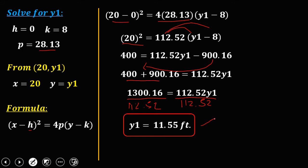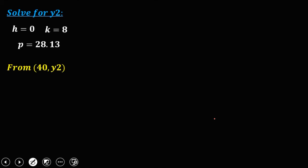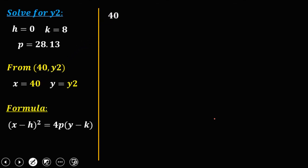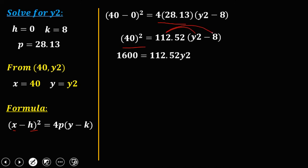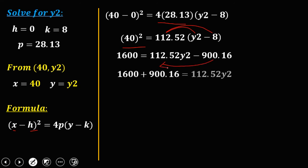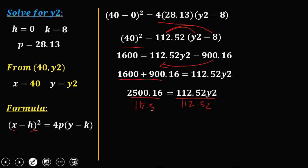For the second vertical cable, using coordinate (40, Y2) with the same formula: (40 − 0)² = 4(28.13)(Y2 − 8). Simplifying: 1600 = 112.52(Y2 − 8). Distributing: 1600 = 112.52·Y2 − 900.16. Transposing and adding: 1600 + 900.16 = 112.52·Y2. Dividing both sides by 112.52, therefore the second vertical cable Y2 = 22.22 feet.